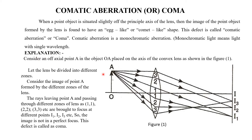Now coming to the explanation. Consider point A in the object OA, which is not on the axis — the point A is slightly above the axis, that is, off the axis. We know that this convex lens can be divided into a number of zones: 1-1, 2-2, 3-3, etc., having different radii.